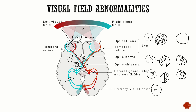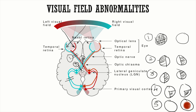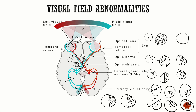For optic radiation: the superior optic radiation runs through the parietal lobe, so a lesion causes inferior quadrantanopia — known as 'pie in the floor.' The inferior optic radiation runs through the temporal lobe, so a lesion causes superior quadrantanopia — known as 'pie in the sky.' A lesion of the visual cortex causes homonymous hemianopia with macular sparing.